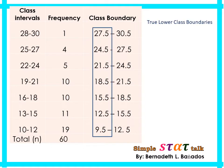The values that are inside the box, we call them the true lower class boundaries. How are we going to obtain those? We are going to use the value of our lower limit. For true lower class boundaries, the values we use are the lower limits. For the first class interval, the value of our lower limit is 10, so we have to subtract it by 0.5.